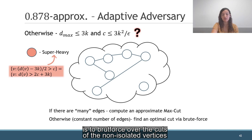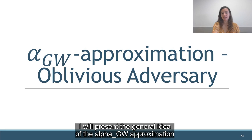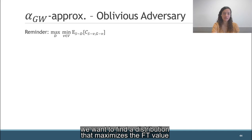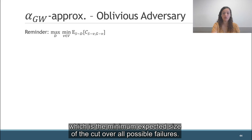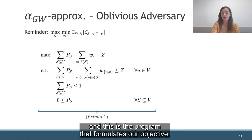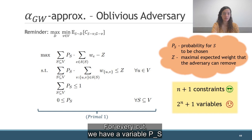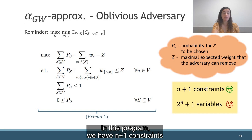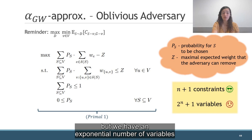In the few minutes that we still have, I will present the general idea of the alpha-GW approximation for the oblivious adversary. We want to find a distribution that maximizes the FT value, which is the minimum expected size of the cut over all possible failures. Here we use a linear program. For every cut, we have a variable p_S representing the probability of the cut being sampled. In addition, we have the variable z, which represents the expected size that the adversary can remove from the graph. This program has n plus 1 constraints, which is great, but we have an exponential number of variables, which is bad.